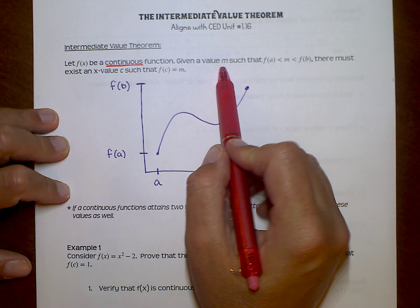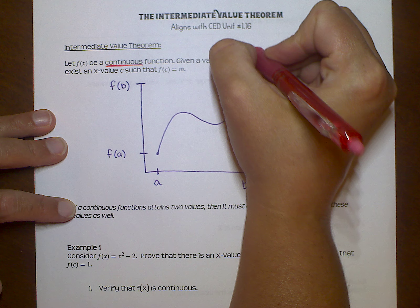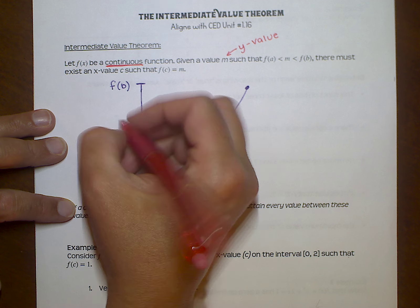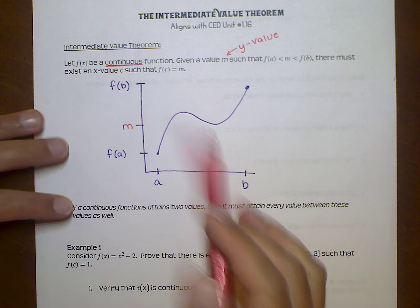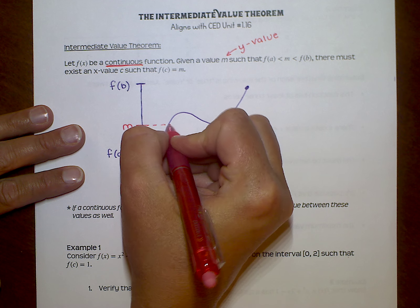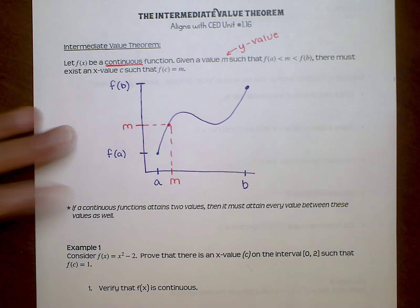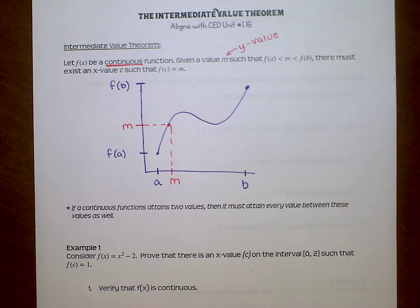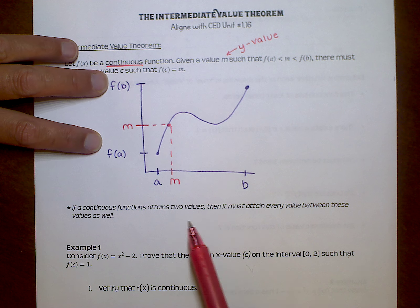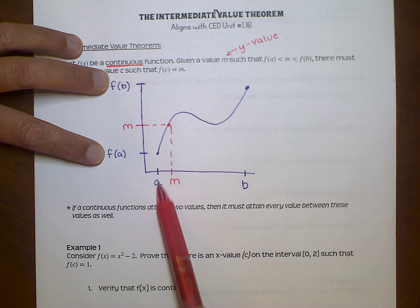If I choose a value M that lives between F of A and F of B — and when we're talking about this value M, we're talking about a Y value, an output value — if I choose an M somewhere in between these two, what the theorem tells me is there must be an X value between A and B that corresponds with that M. That doesn't sound like a real big deal. Honestly, it probably doesn't sound like it's even worth mentioning.